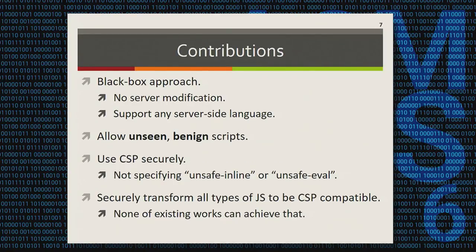Based on the limitations of existing works, we propose our system CSP Autogen, a black-box approach that can automatically deploy content security policies for existing websites. As a black-box approach, it requires no server modification and supports any server-side language. Second, it allows unseen but benign scripts to be executed based on a novel template mechanism. Third, it deploys CSP securely — it will never specify unsafe-inline or unsafe-eval in the policies it generates. Fourth, it can securely transform all types of JavaScript to be CSP compatible, so benign ones can be executed and malicious ones will be blocked.